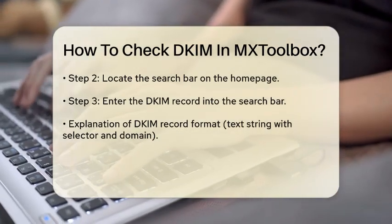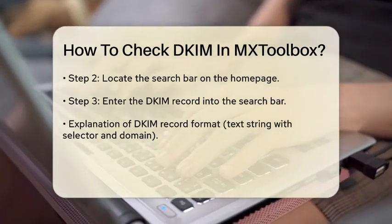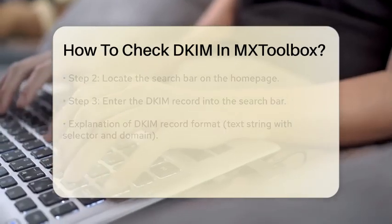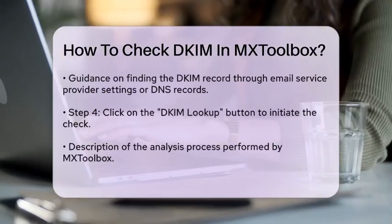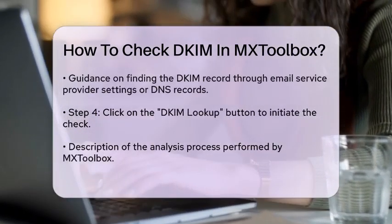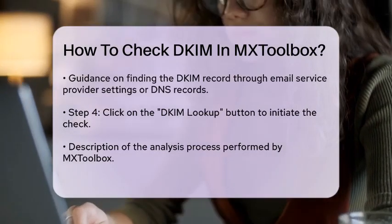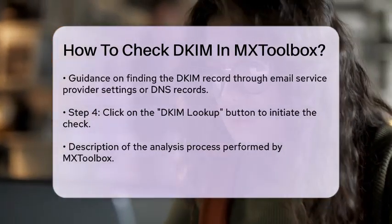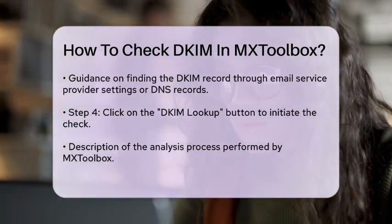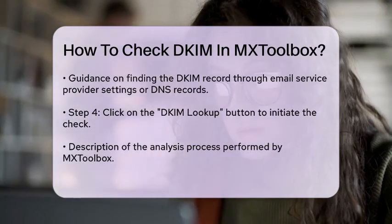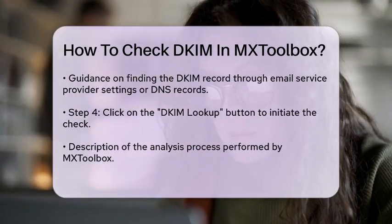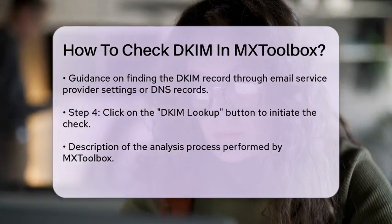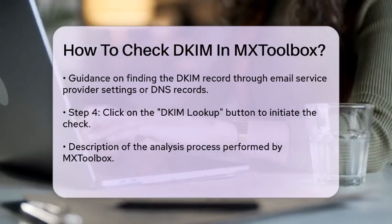Once you have the correct DKIM record, copy it and paste it into the search bar on the MX Toolbox website. After entering the DKIM record, click on the DKIM Lookup button. This action will prompt MX Toolbox to perform a check on the DKIM record you provided. The tool will then analyze the record and display the results on the screen.